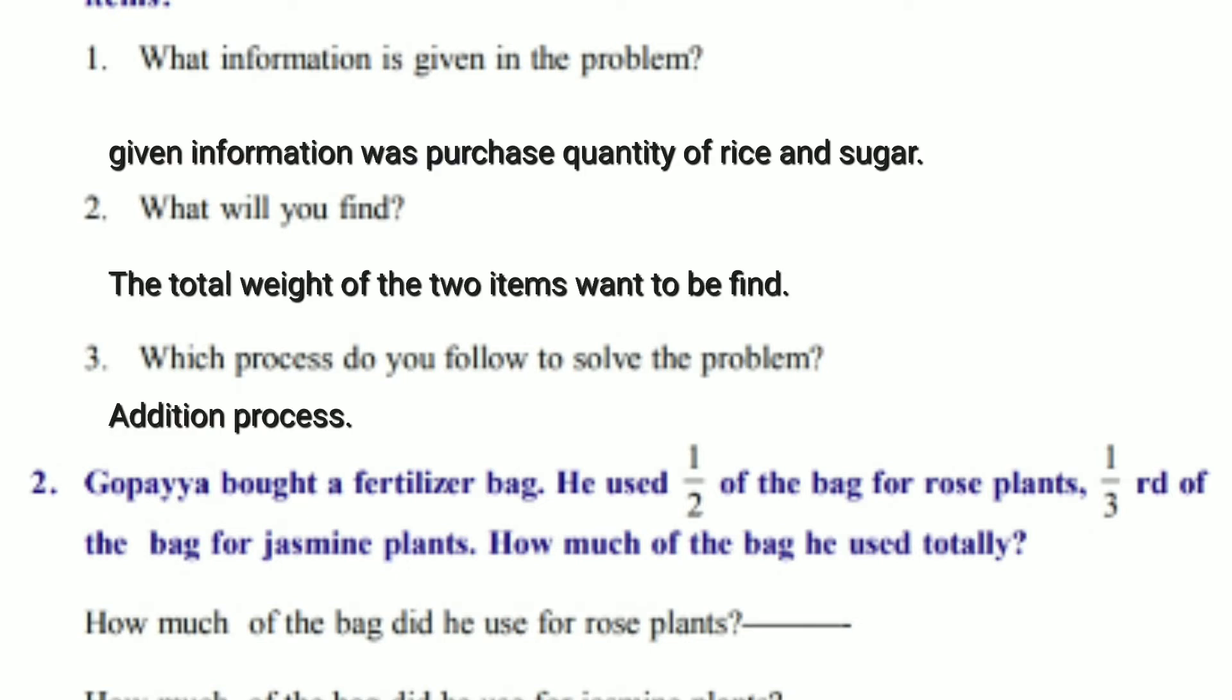Answer: given information was purchase quantity of rice and sugar. Second one: what will you find? The total weight of the two items want to be find. Third one: which process do you follow to solve the problem? Answer: addition process.